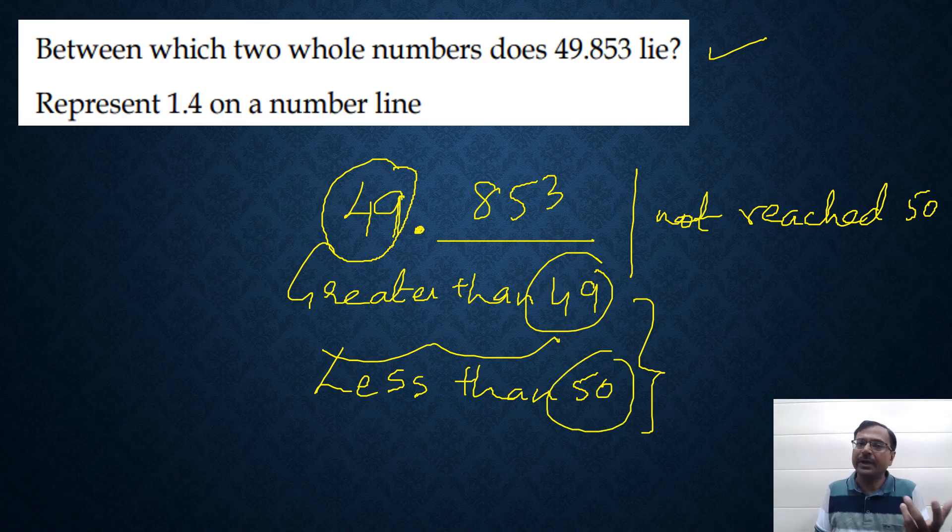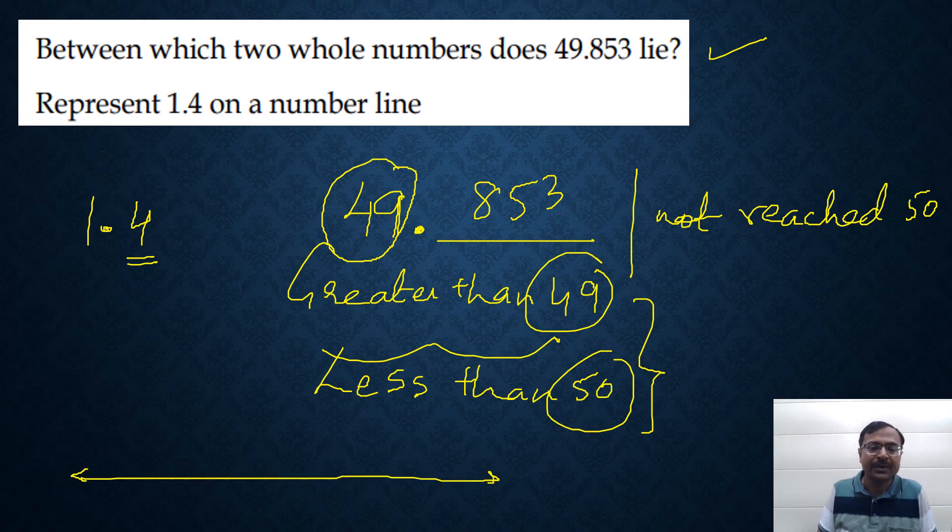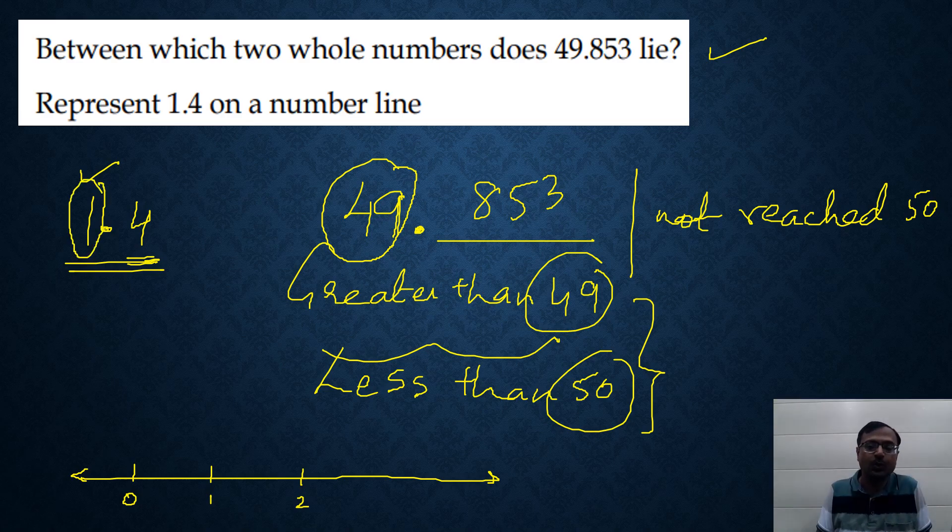How do you represent decimal numbers on a number line? See, 1.4. If he asks us to write 1.4 on a number line, we have only one digit after decimal. So, what we are going to do is we are going to separate out, suppose this is 0, this is 1 and this is 2. We know that this 1.4 lies between 1 and 2. Just now, I told you the concept. It is greater than this number and less than the next whole number. So, between 1 and 2.